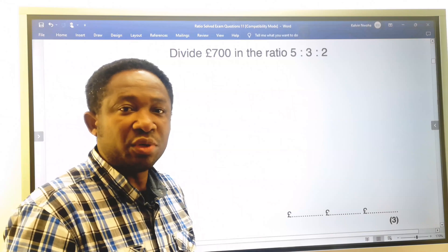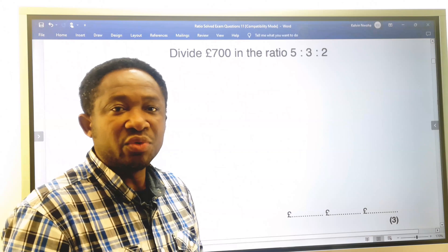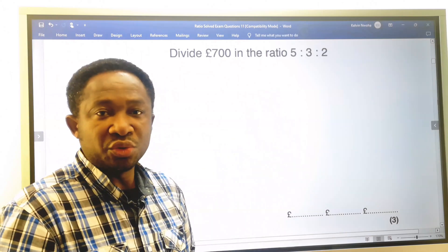In this exam question, we're going to divide 700 pounds in the ratio of 5 to 3 to 2.